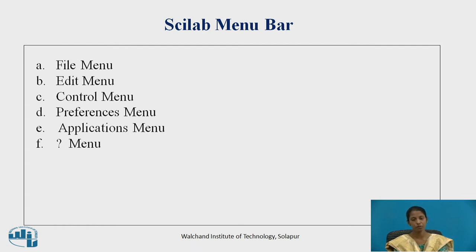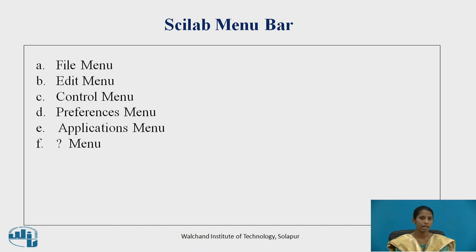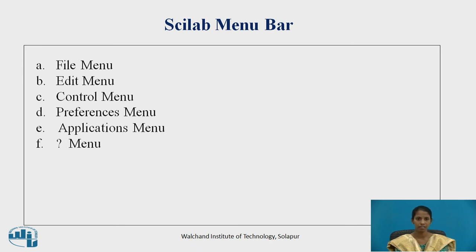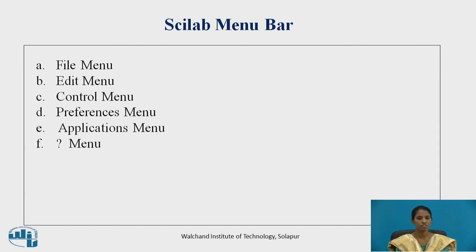Preference menu — in this, the color, font, and toolbar and history can be shown. Application menu — in this, there is a Scilab to MATLAB converter and also a Scilab 2 application. The last menu consists of Scilab help and Scilab demonstrations, which are very useful for beginners trying Scilab for the first time.